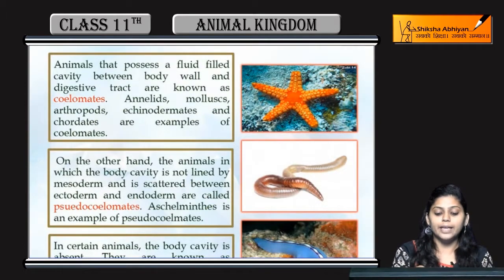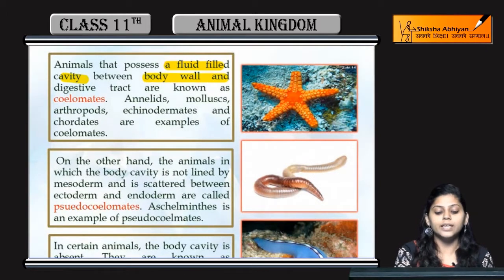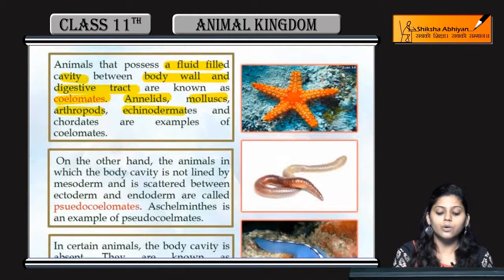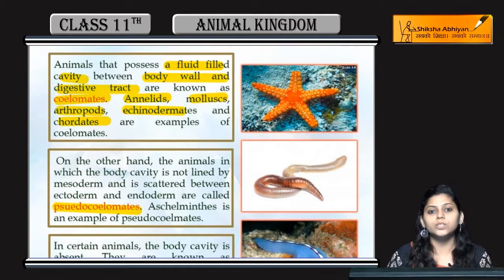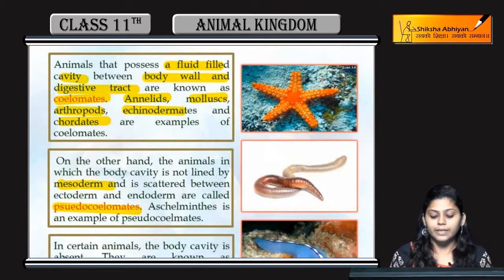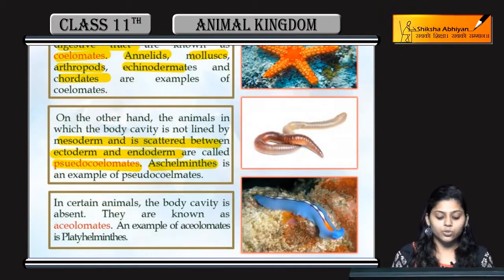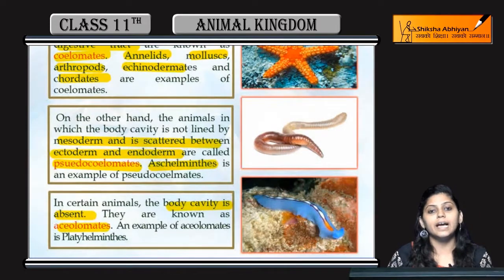To summarize: animals that possess a fluid-filled cavity between the body wall and digestive tract are called coelomates — examples include annelids, mollusks, echinoderms, arthropods, and chordates. Pseudocoelomates have a false coelom that is not within the mesodermal lining but is scattered between ectoderm and endoderm — example is Aschelminthes. Acoelomates are those in which coelom is absent and body cavity is absent, and their position in evolutionary history can be determined accordingly.